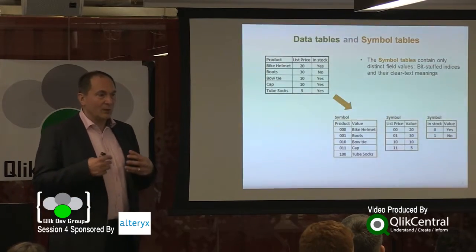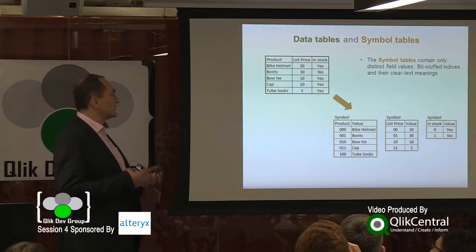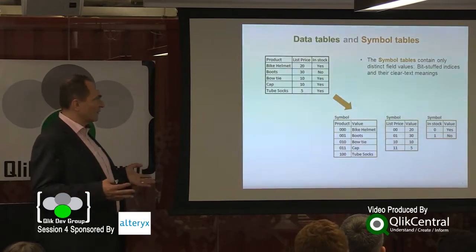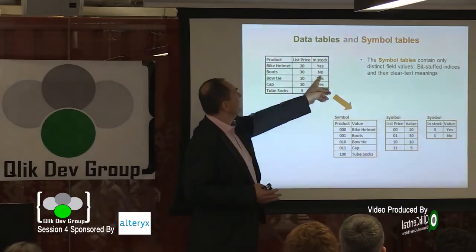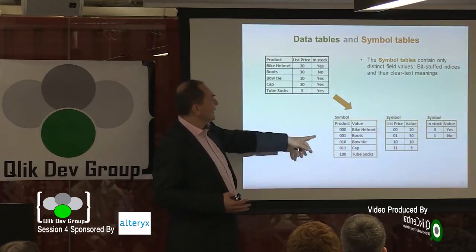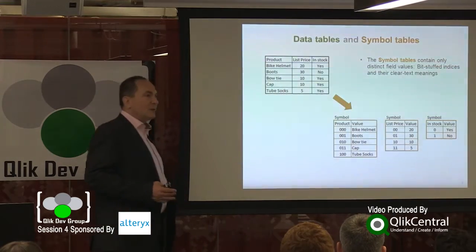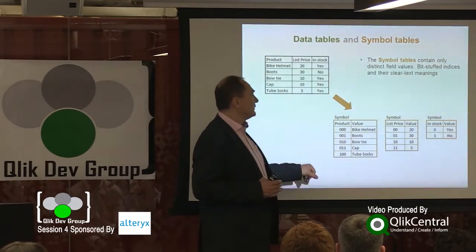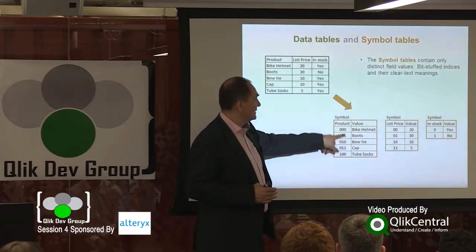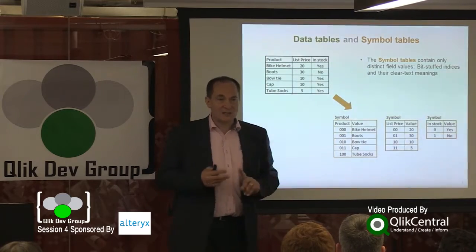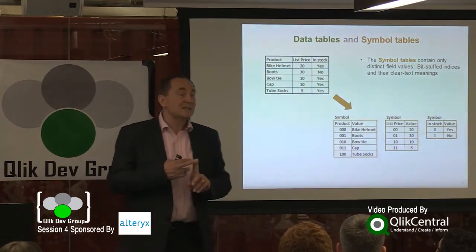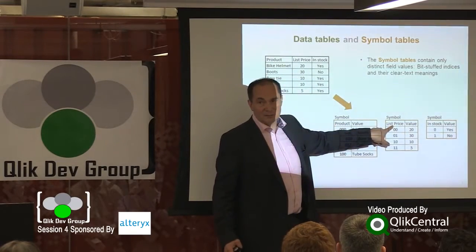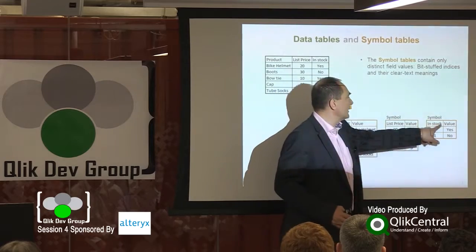When you run the script, you load a table. What the script engine does in the background is it splits up that table into several internal tables. First of all, it looks at three different fields, three different columns here, and creates three different symbol tables. A symbol table is just a list of the distinct values with an index in front of it. The interesting part is that the index is always bit-stuffed — meaning it only uses as many bits as needed. If you have four values, then you have two bits in your index, so that way you can address all the clear text values.